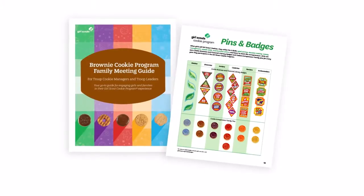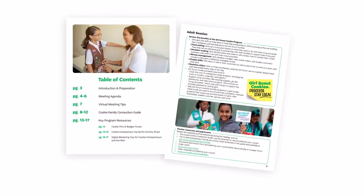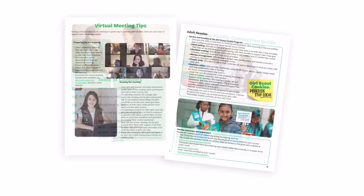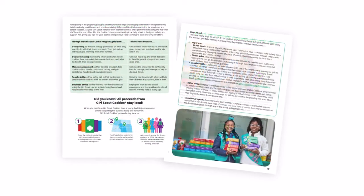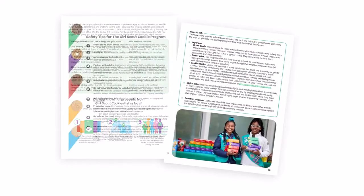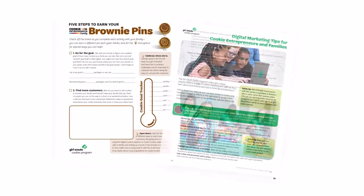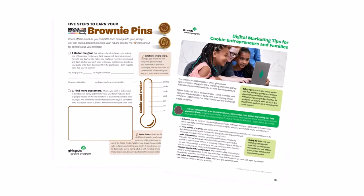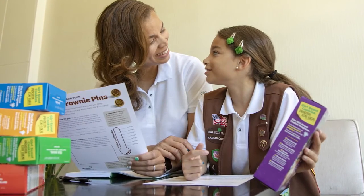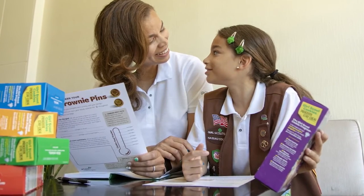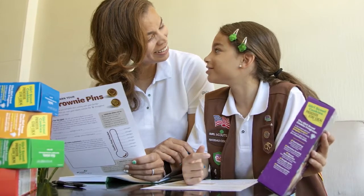You can find this digital resource in the Girl Scouts Volunteer Toolkit on your council's website. With a meeting outline that includes in-person and virtual recommendations, as well as an introduction to the cookie program, you'll have everything you need to succeed. High-quality family time is priceless, and working together on cookie entrepreneur family pins makes it even sweeter.